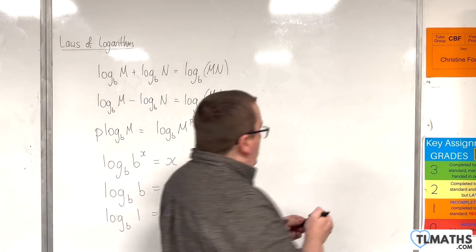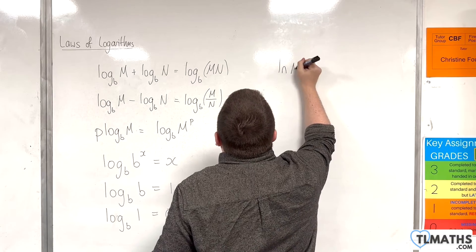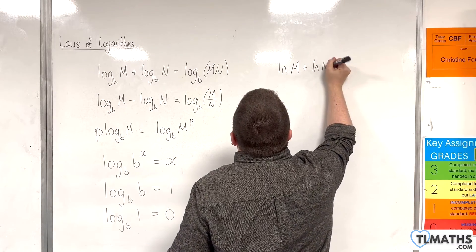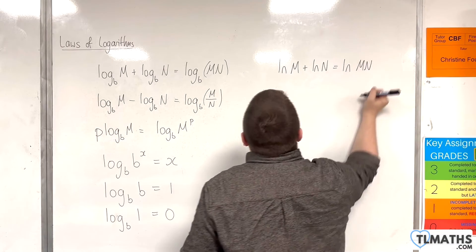So the way that we write it, we've got the product rule: the natural log of m plus the natural log of n will be equal to the natural log of m times n.